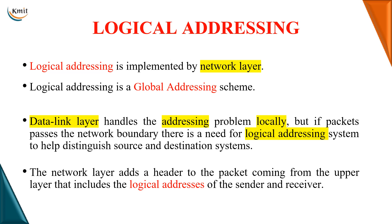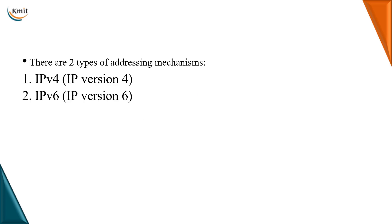Logical addressing is implemented by the network layer. Logical addressing is basically a global addressing scheme. As I mentioned, data link layer handles addressing locally, but if packets have to cross boundaries over networks, we need a logical addressing system to distinguish source and destination systems. In this regard, the network layer adds a header to the packet, and that header consists of the logical address of the sender and receiver.